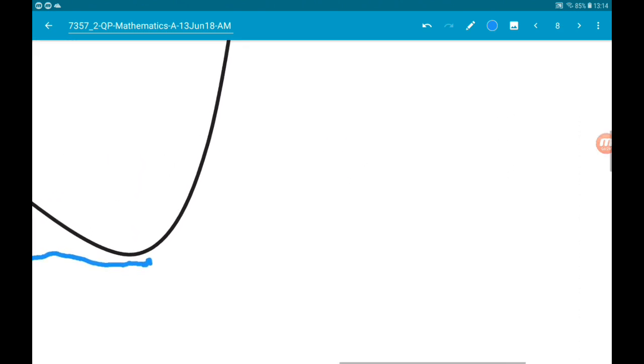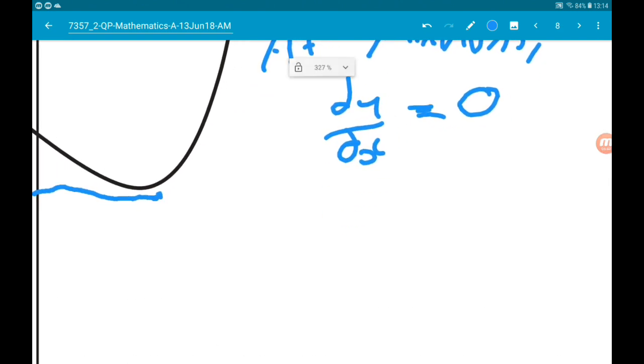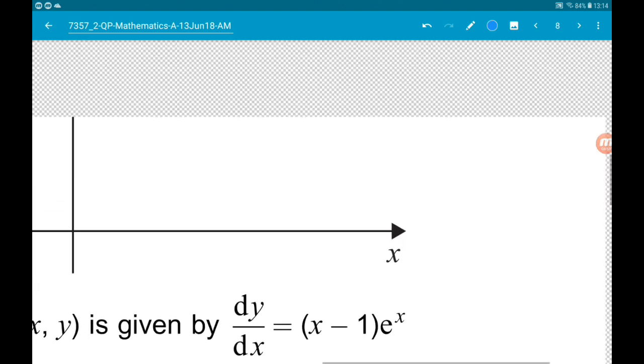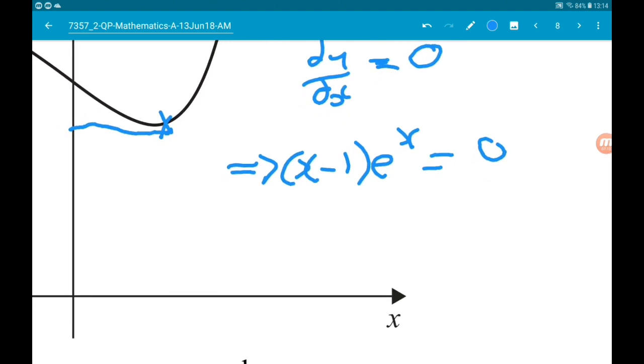Okay, now luckily, at minimums, dy by dx is equal to zero. So at this point, we know then here that dy by dx is x minus one, e to the x. So at this point, we have got x minus one times e to the x is equal to zero. We can divide through by e to the x. So x minus one is equal to zero, which gives us x is equal to one.